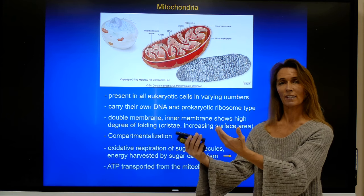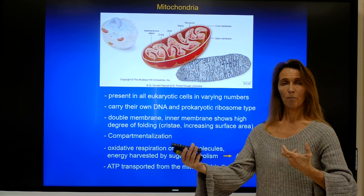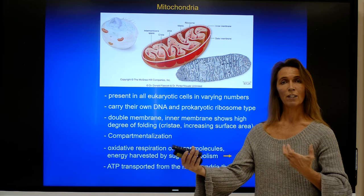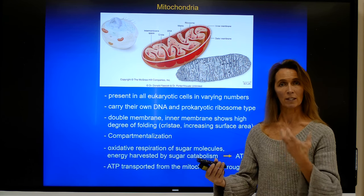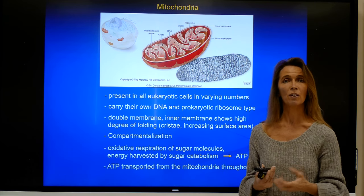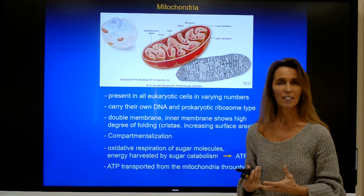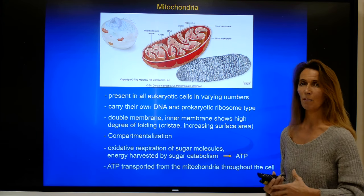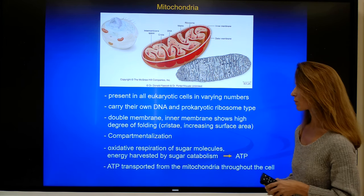So photosynthesis and the Calvin cycle, and the Krebs cycle and the metabolism of glucose and storage of that energy in the form of ATP that is more accessible to eukaryotic cells — it's really very interesting how evolution has come up with these two very complementary mechanisms.